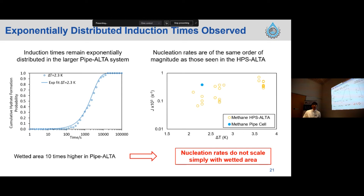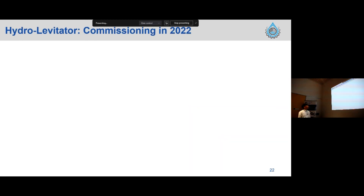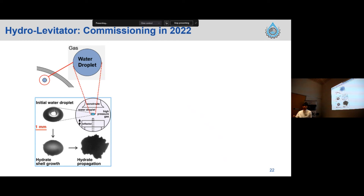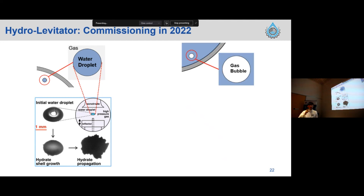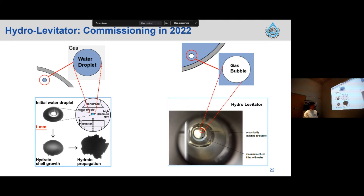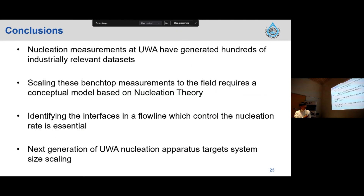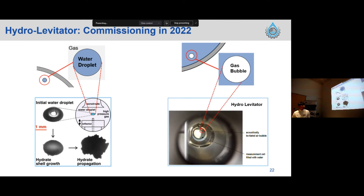Aside from this newly developed pipe cell, I'd like to mention another interesting apparatus that will be commissioned in 2022, which is the hydrate cycle. As Mark mentioned earlier, we have a lot of different types of system sizes. One will be water droplets suspended in gas space, where we can use the acoustic levitator to independently quantify the role of water-gas interface area. But what about gas bubbles in bulk water? Here is where the hydrate cycle can help. There will be a high-pressure measurement cell filled with water, and we inject gas bubbles and automatically levitate them in the filled water. In this way, we can also independently quantify how the nucleation rate behaves and what the role of the water-gas interface is in this case.